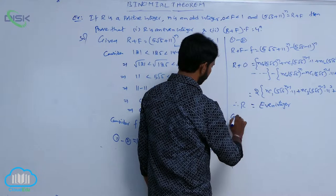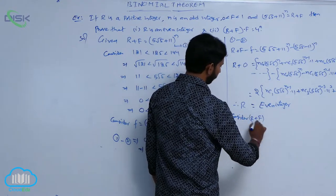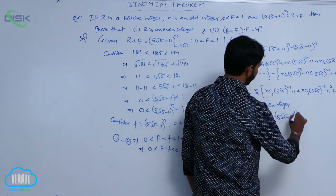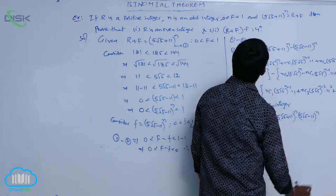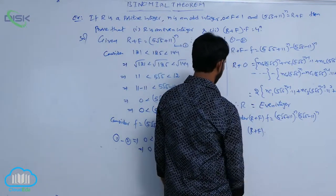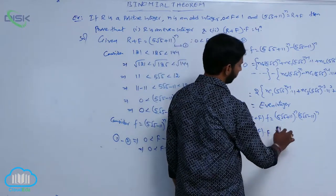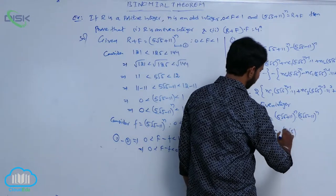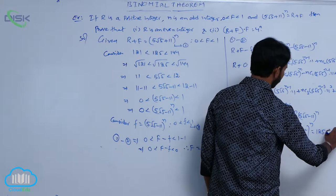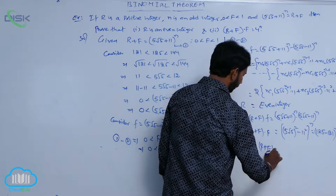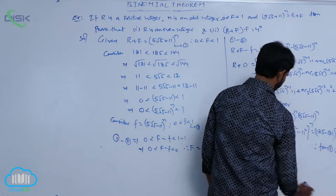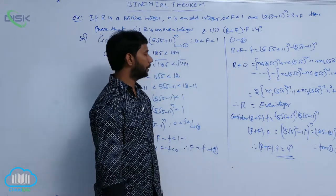For the second part, consider (R + F) · F. Since F = f from condition 3, this equals (5√5 + 11)^n · (5√5 − 11)^n = [(5√5 + 11)(5√5 − 11)]^n = [(5√5)² − 11²]^n = [125 − 121]^n = 4^n. Therefore (R + F) · F = 4^n.